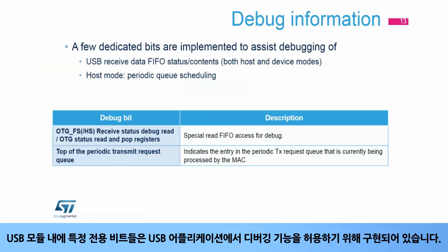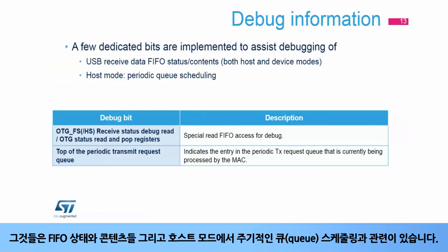Within the USB module, certain dedicated bits are implemented to allow debug functionality in a USB application. They relate to FIFO status and contents and the scheduling of periodic queues in host mode. Additional details of these debug bits are listed in this table.